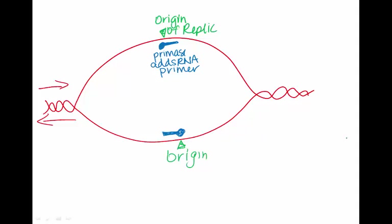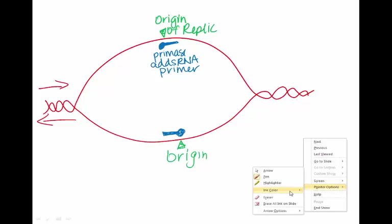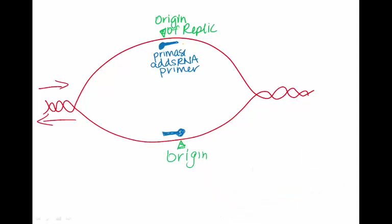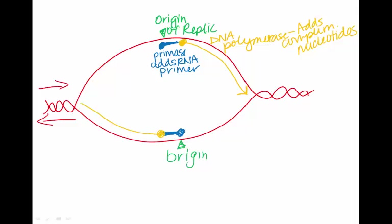Once the primer is there, DNA polymerase can come in and add complementary nucleotides to turn the single-stranded DNA in red into double-stranded DNA in orange. And again, the same thing will happen over here.